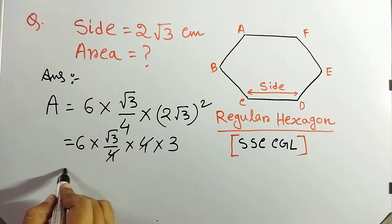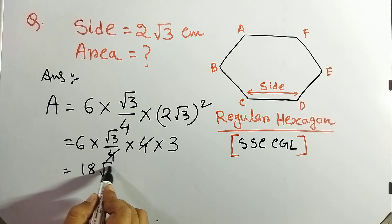So 4, 4, so 3, 6, 3 is the 18, 18 root 3.